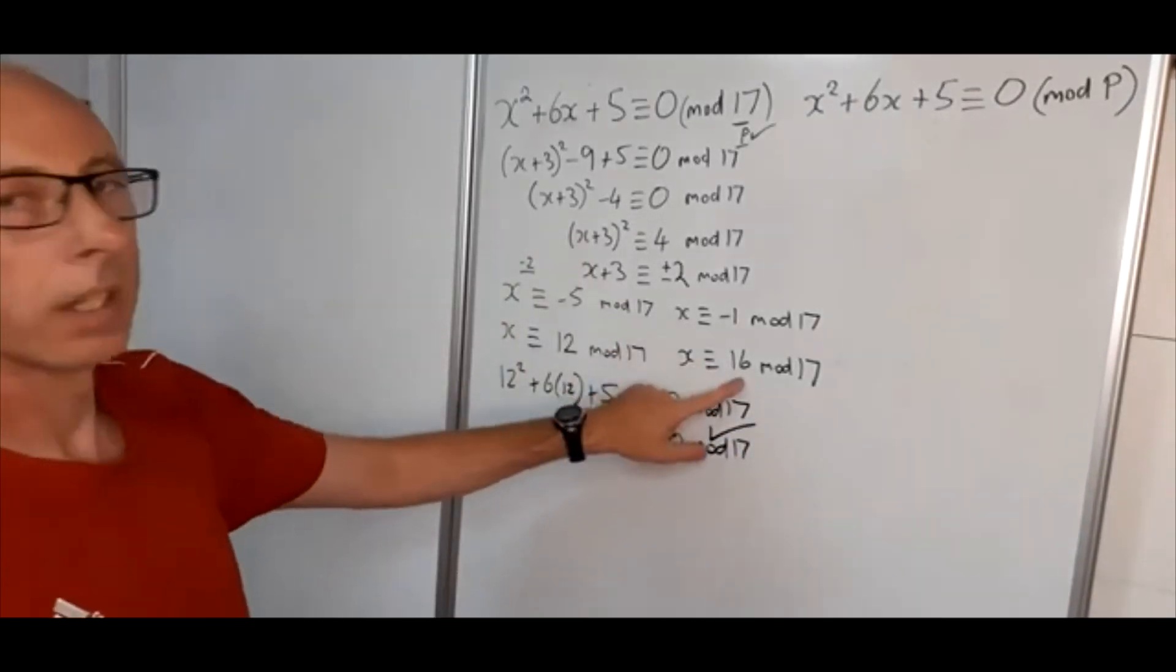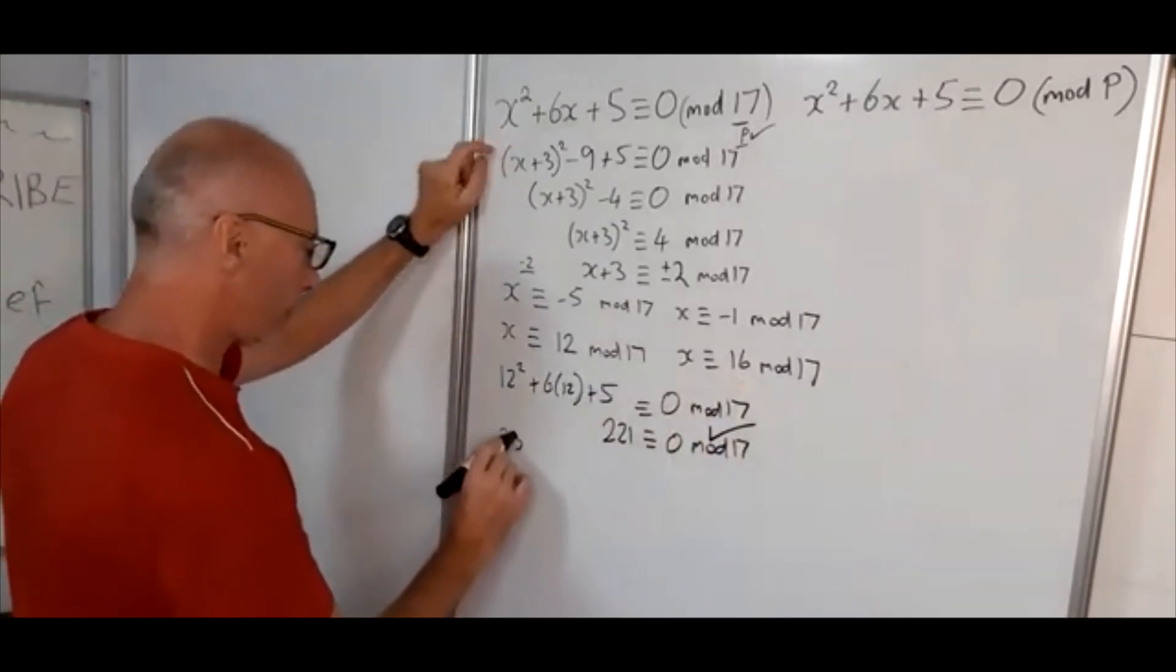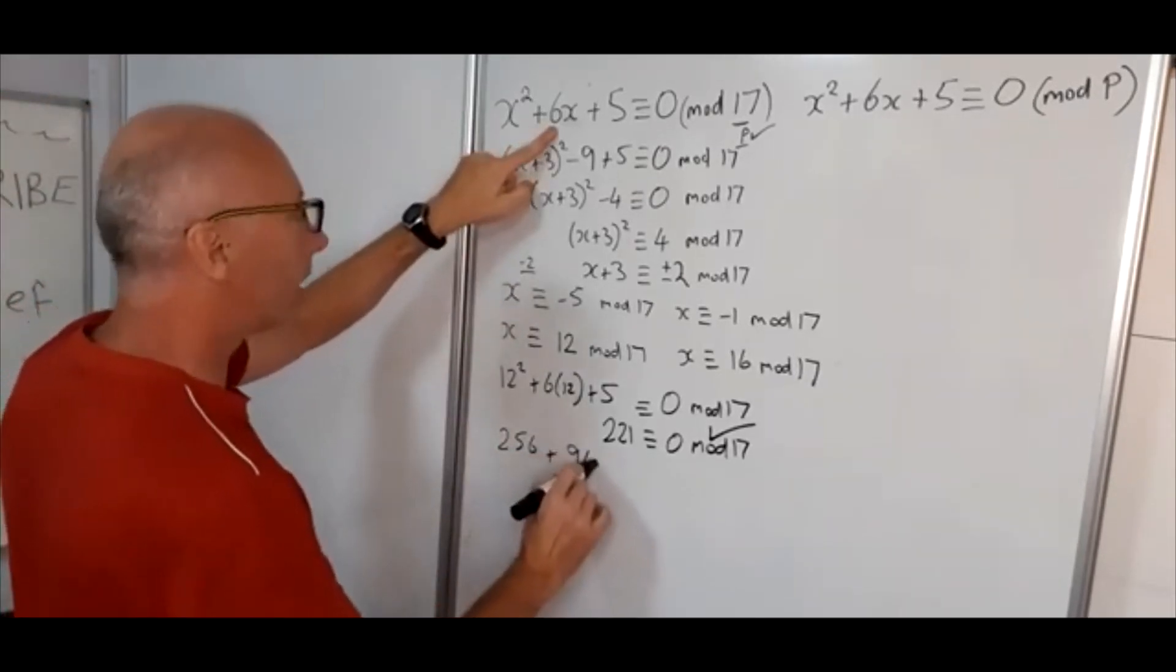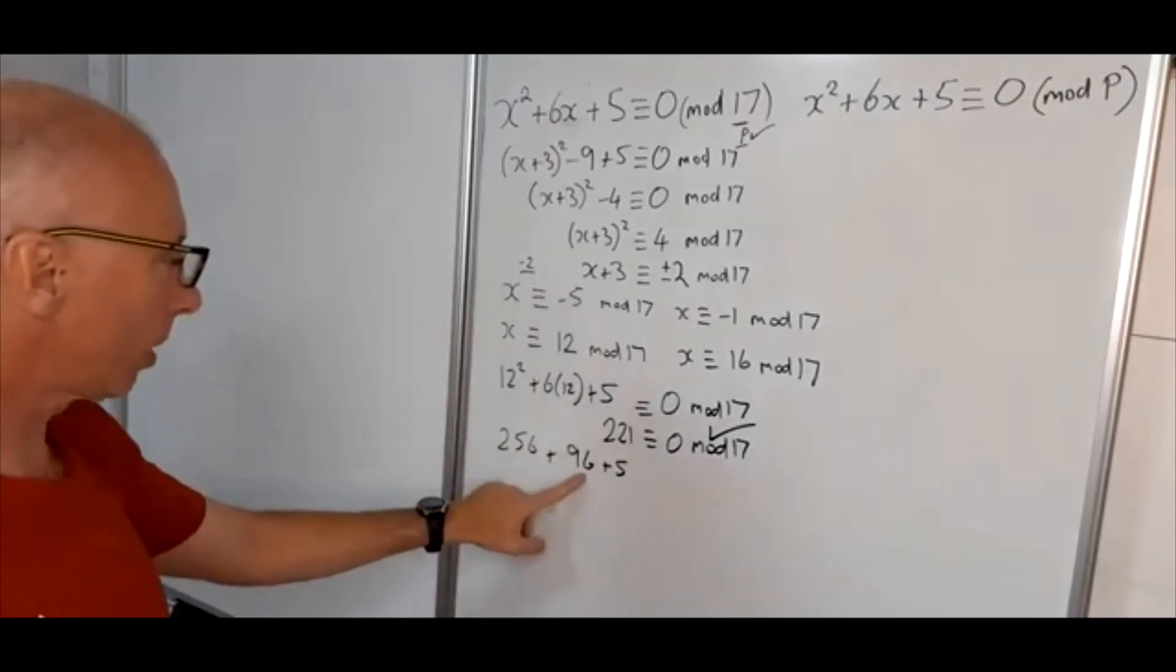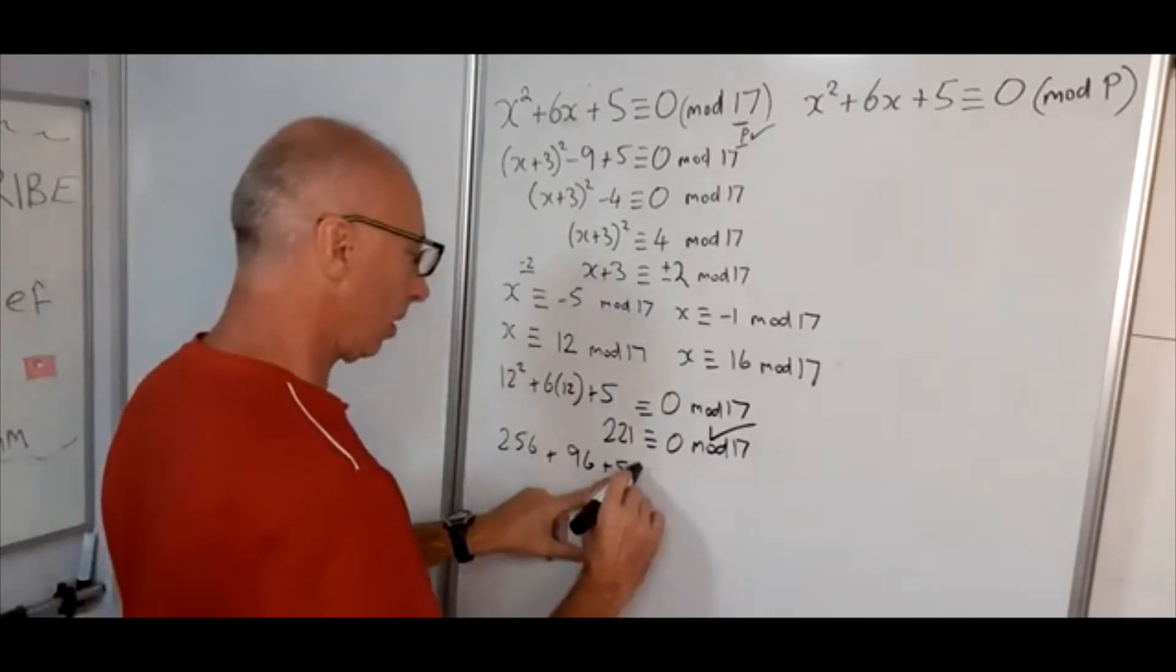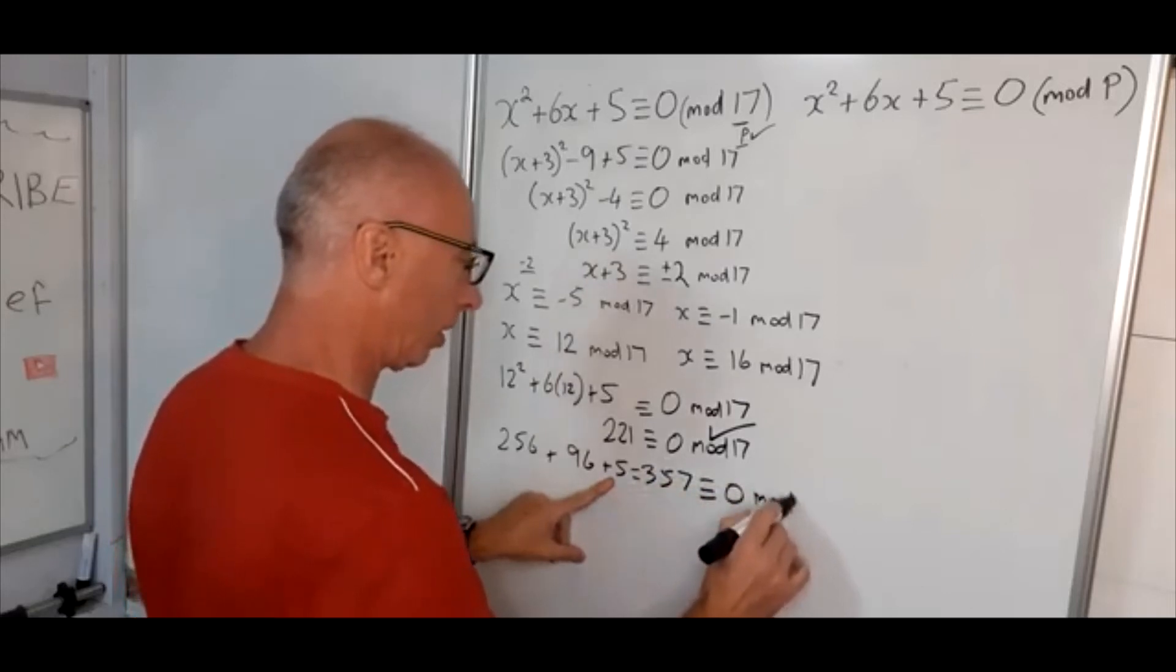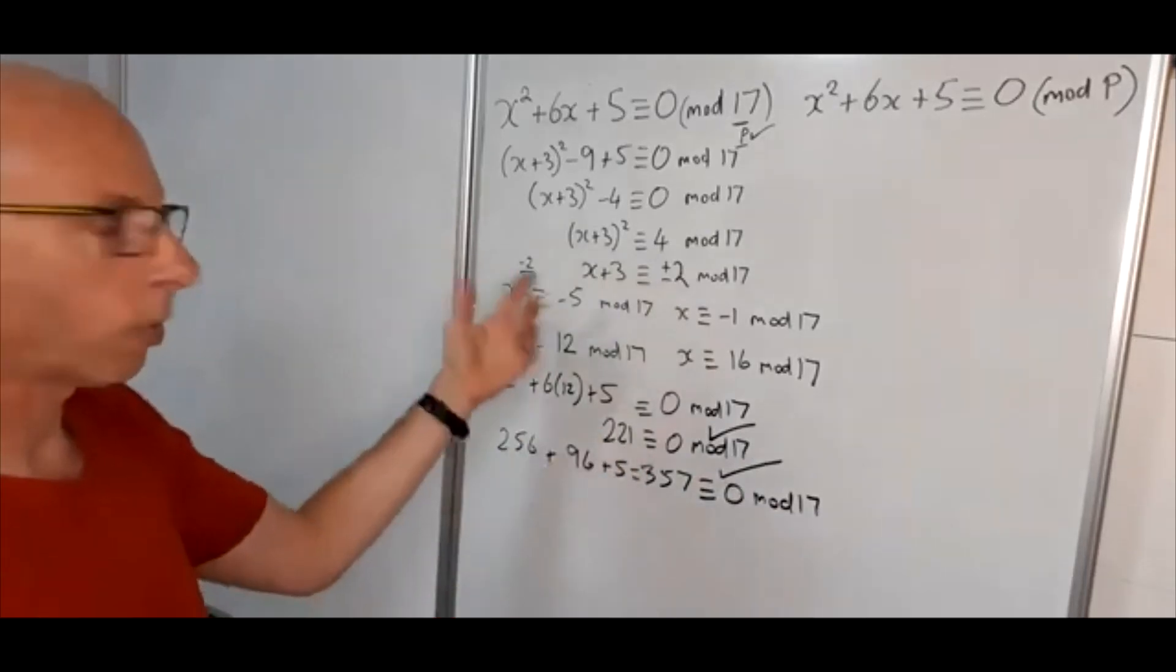That's fine. Now for the case of 16. 16 squared is 256 plus 16 times 6 is 96 and plus 5. So 256 plus 96 is 352 plus 5 is 357. So 357 is congruent with 0 mod 17. So therefore our solutions are 12 and 17.